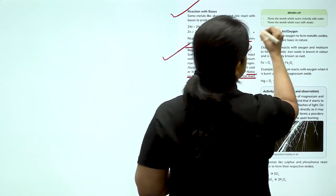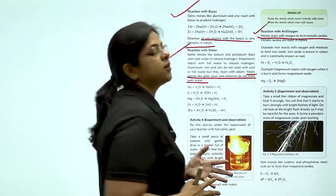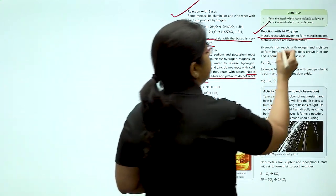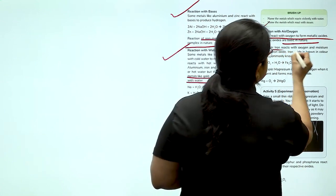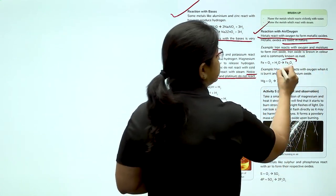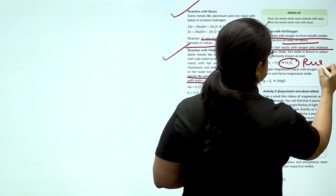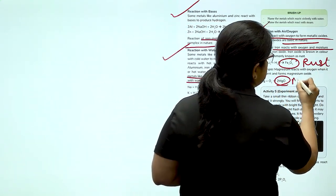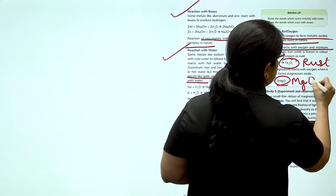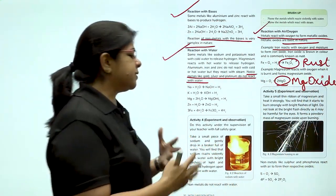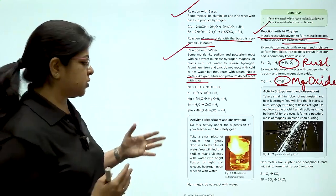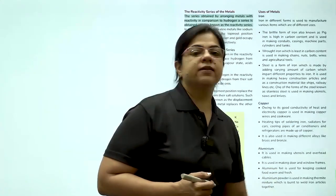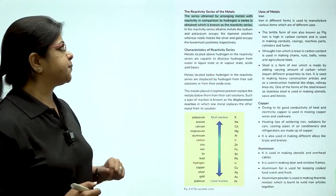Reaction with air and oxygen. Metals quickly react with oxygen to form metallic oxides. Metallic oxides are basic in nature. Iron reacts with oxygen and moisture to form rust. Magnesium reacts with oxygen and it is quickly burnt to form magnesium oxide. We see that metals readily react with oxygen. Non-metals like sulfur and phosphorus react with air to form their respective oxides.